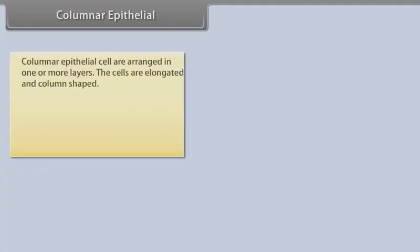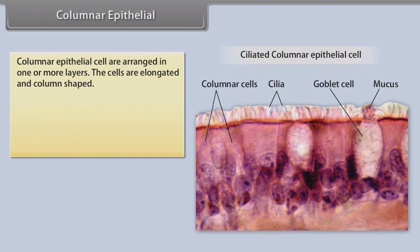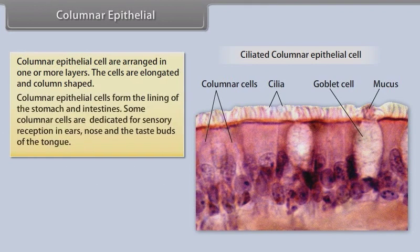Columnar epithelium. Columnar epithelial cells are arranged in one or more layers. The cells are elongated and column shaped. Columnar epithelial cells form the lining of the stomach and intestines. Some columnar cells are dedicated for sensory reception in ears, nose, and the taste buds of the tongue.